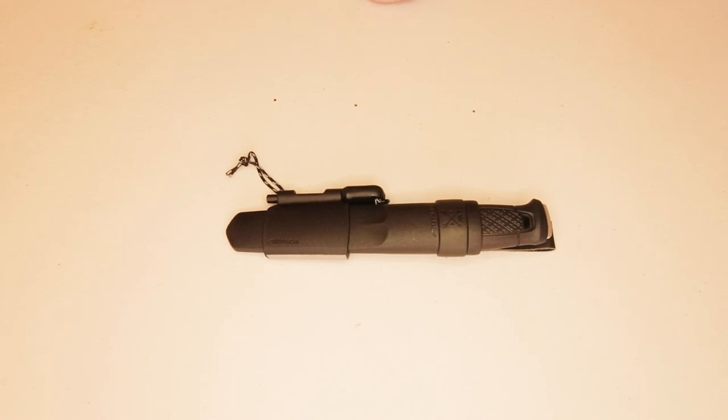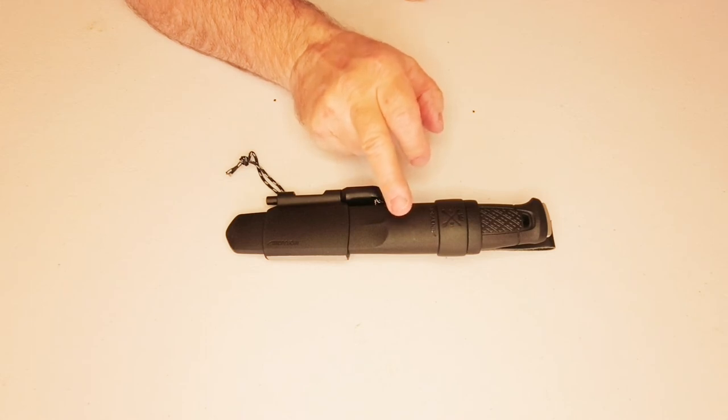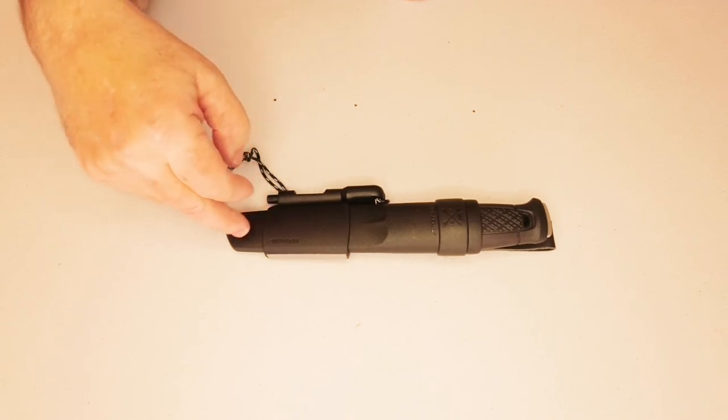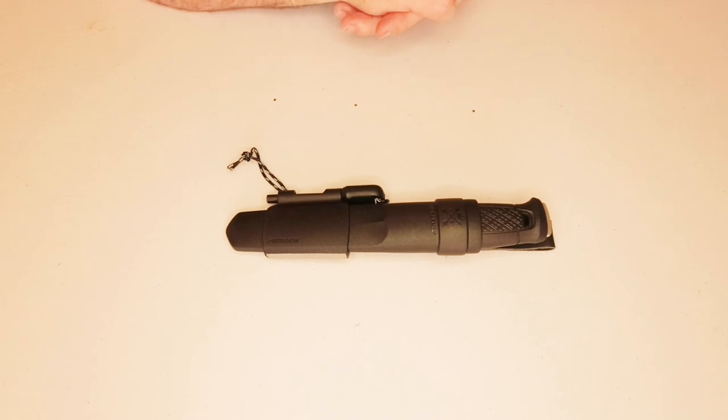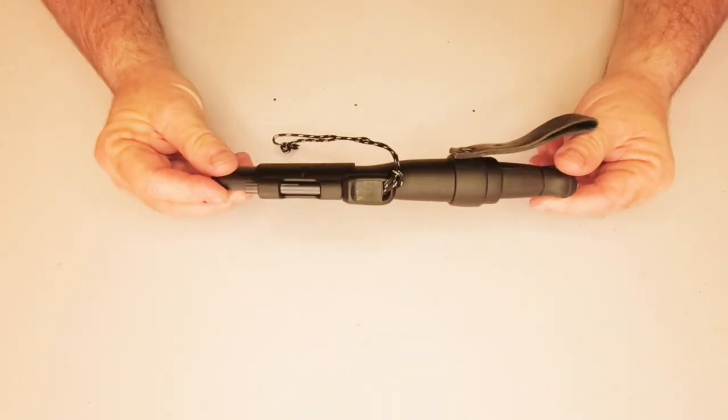So there it is. That's a Morakniv Garberg stainless steel knife with polymer sheath. And it will also fit the Kansbol. The Kansbol, as you most realize is green. They only make this in black at the moment. I did contact Morakniv and asked them if they're going to be making it in green for the Kansbol. And they said they'll pass that on to the design team and see what they think. And that's the last I've heard. So hopefully one day they will make it in green to match the Kansbol, so you can have one color all together.